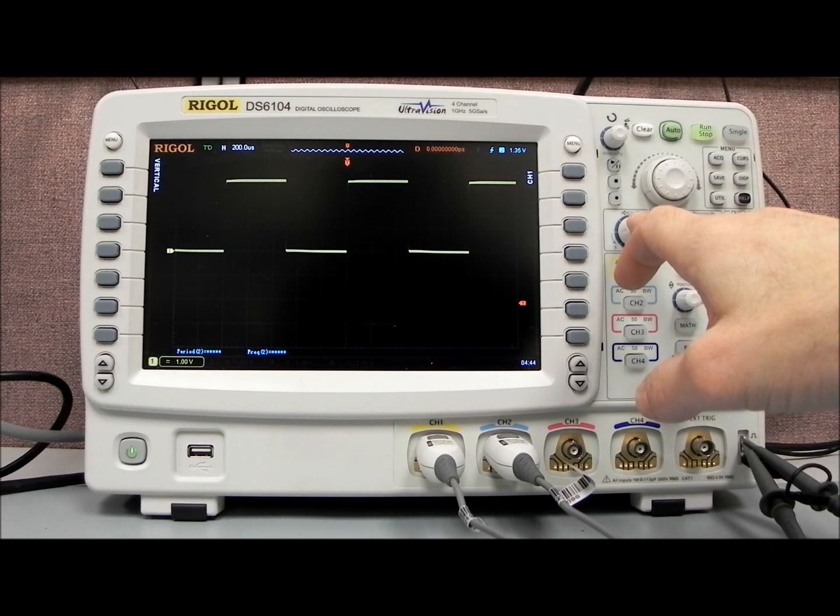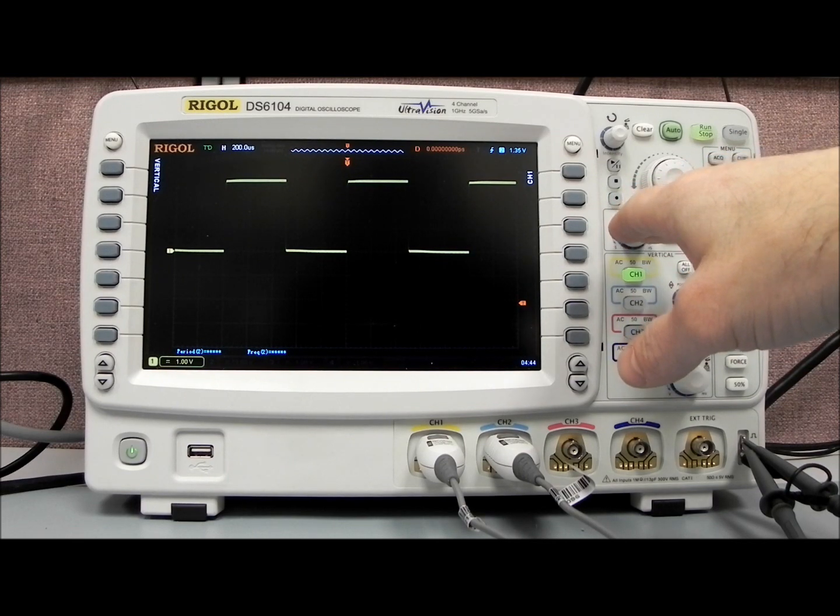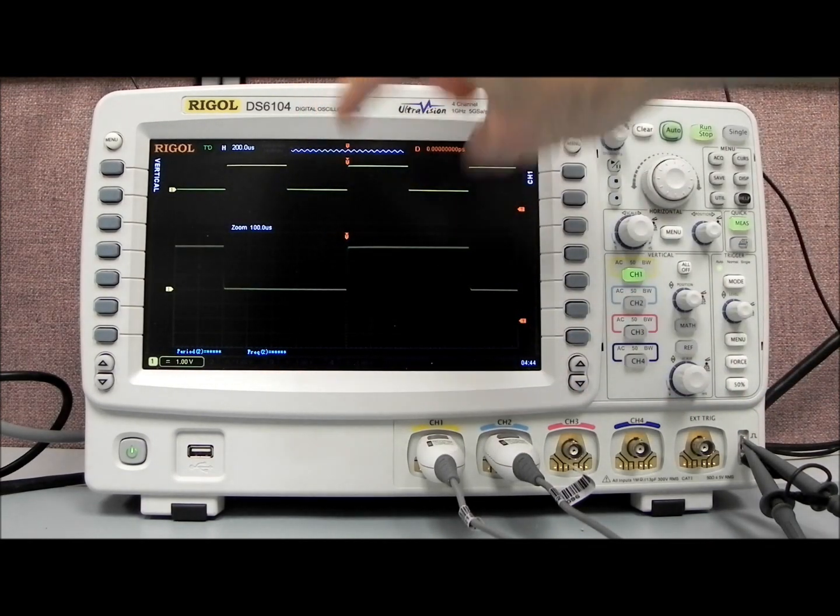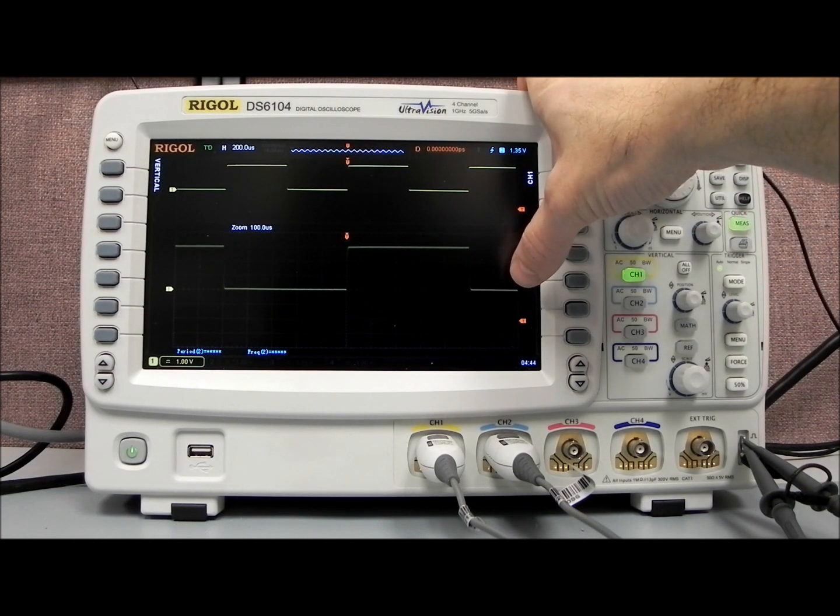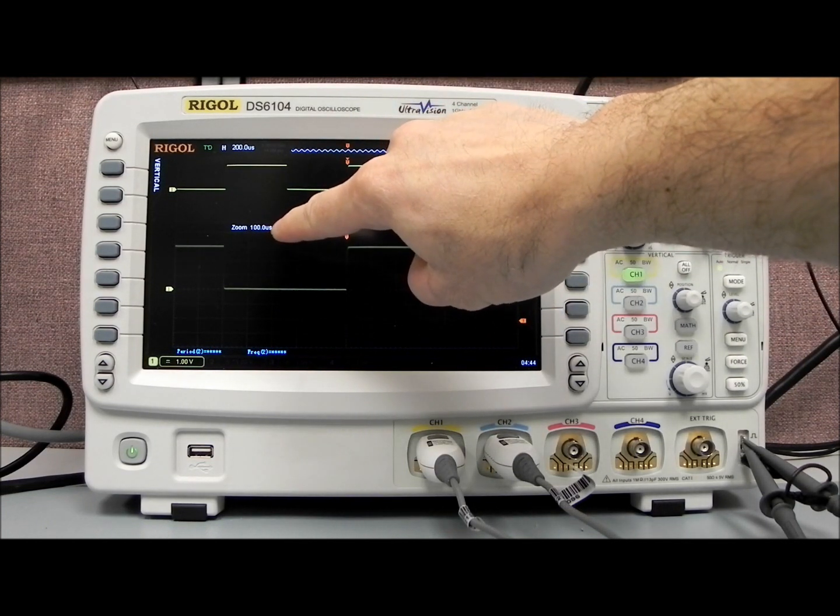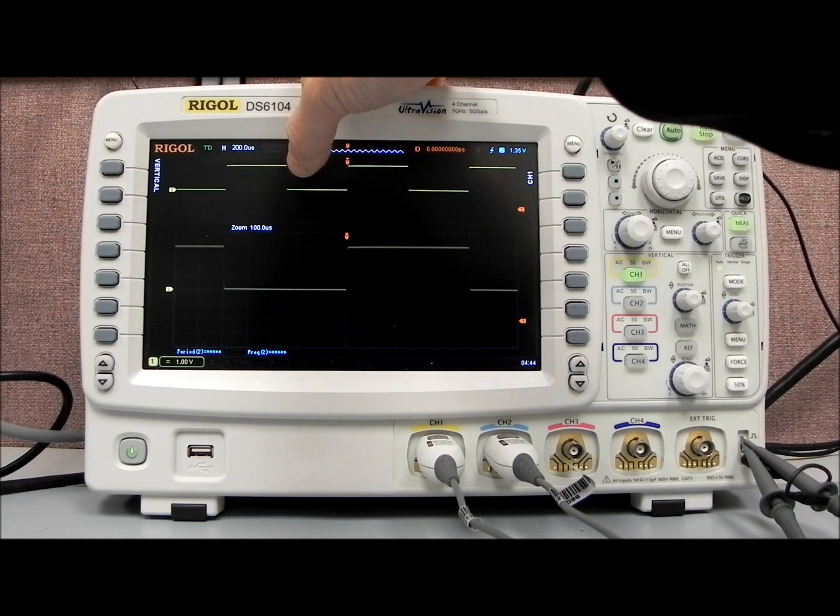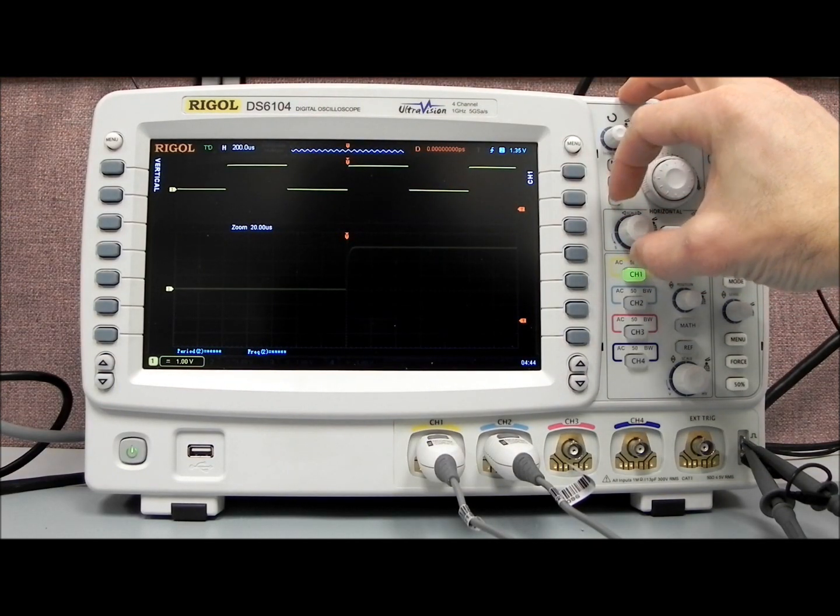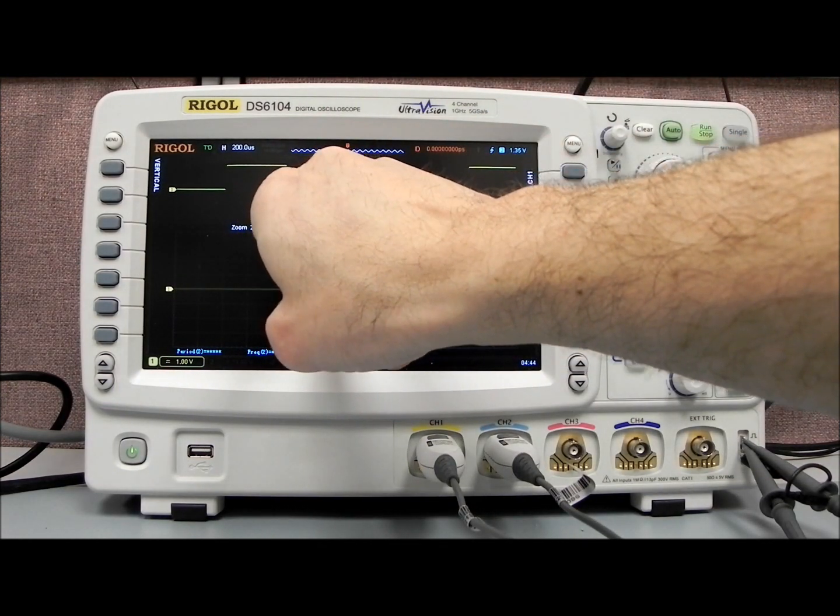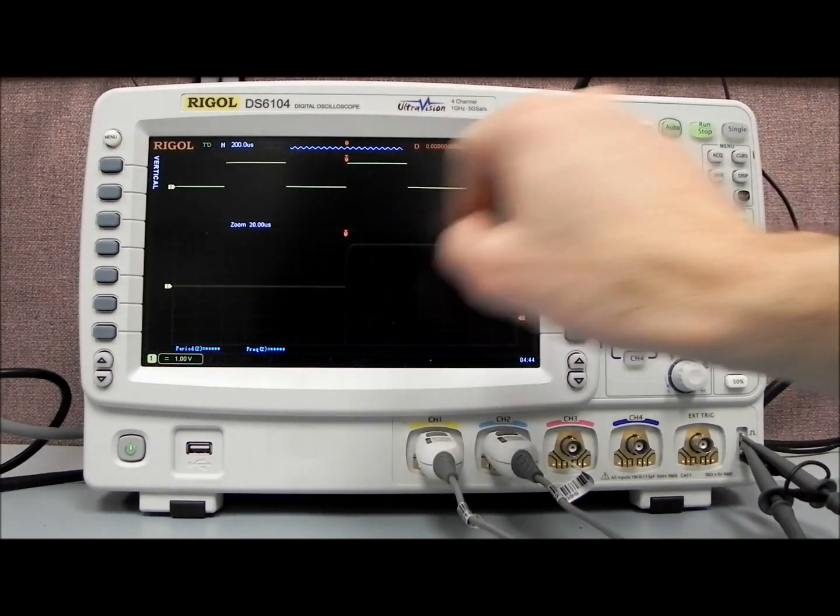Now I'd like to highlight the zoom mode. To get into zoom mode, here's the horizontal scale button. If we press that in, now we'll get the split screen display. On the top, we have the full waveform, and on the bottom, we have a zoomed waveform. You can see now it says zoom 100 microseconds. Remember, that top scale was 200 microseconds per division. Here, what we can do is we're now in control of the bottom-most screen. You'll see the window starts to shrink, so now the visible area that we have here is denoted by this black box on the top.